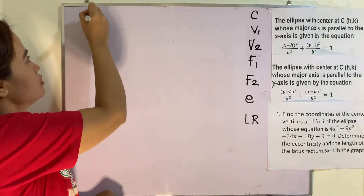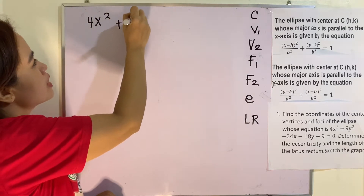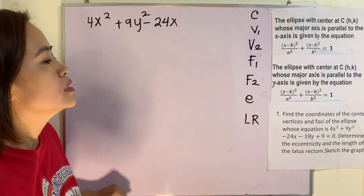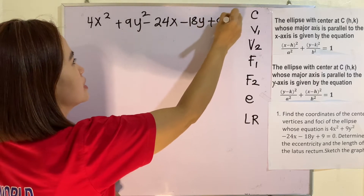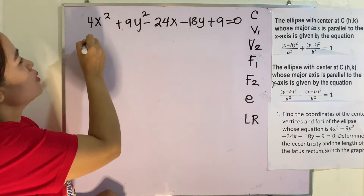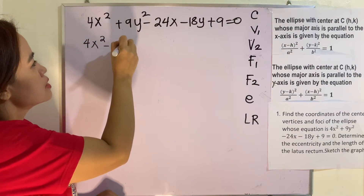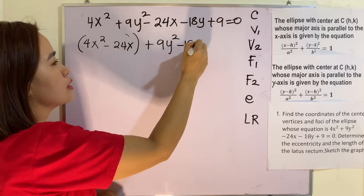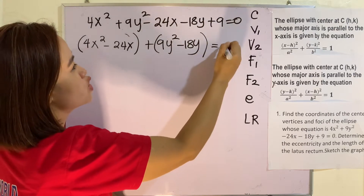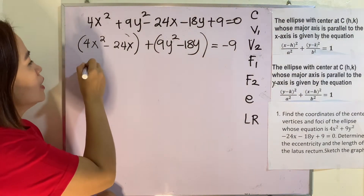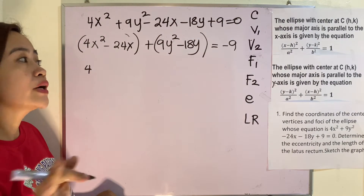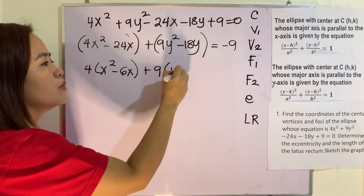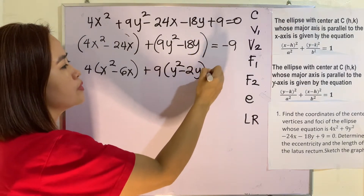We have the equation: 4x squared plus 9y squared minus 24x minus 18y plus 9 is equal to 0. First step, we need to group terms with x and then group terms with y, and then isolate the constant by transposing it to the other side — that becomes negative 9. Then get the greatest common factor of the numerical coefficients only, which is 4.